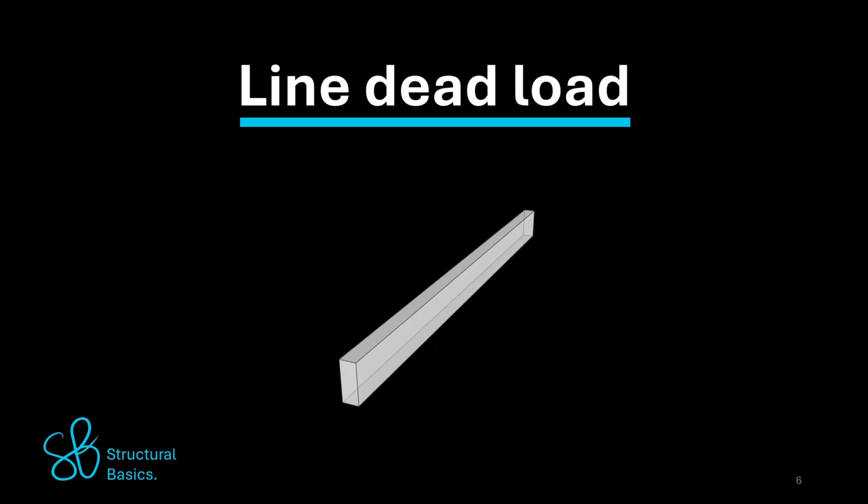As an example, we are calculating the dead load of a timber beam. The line dead load of the beam equals the density of the beam times cross-section width times cross-section height.